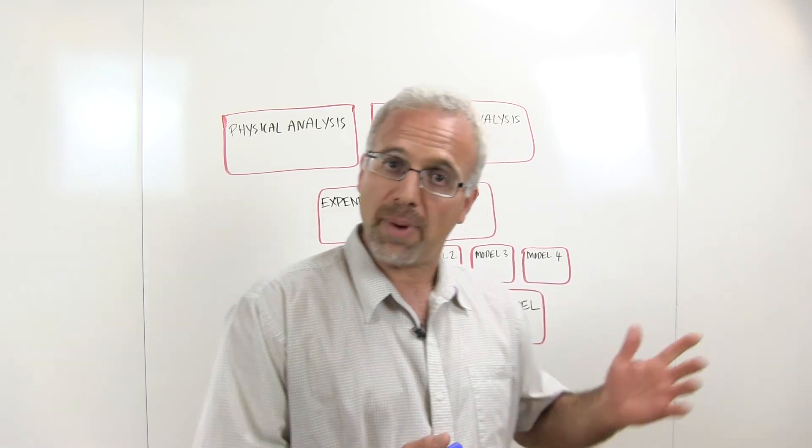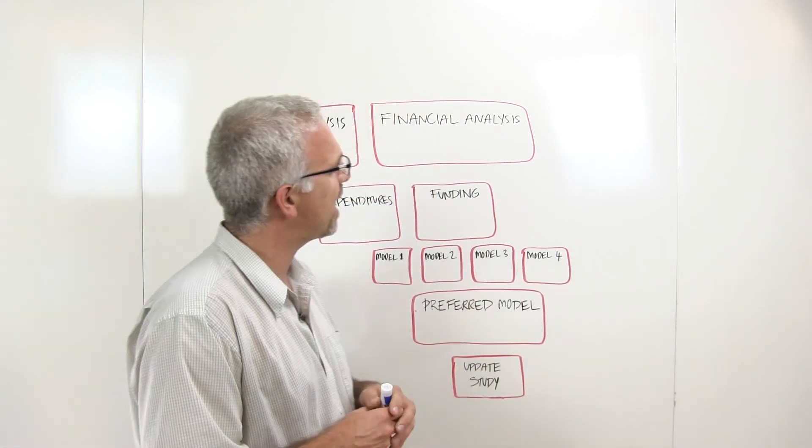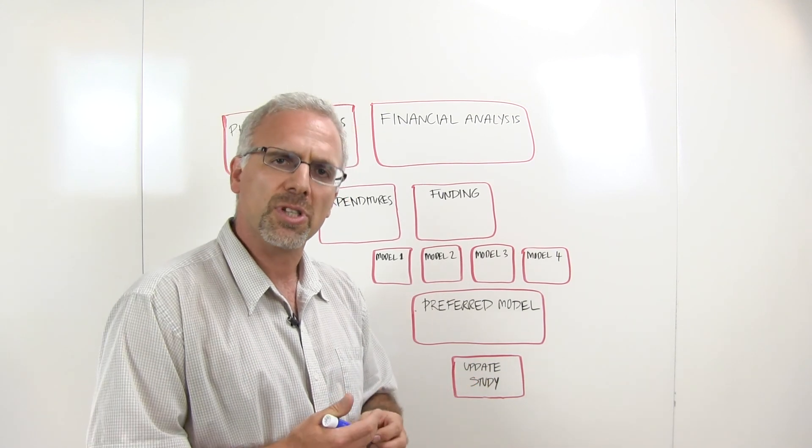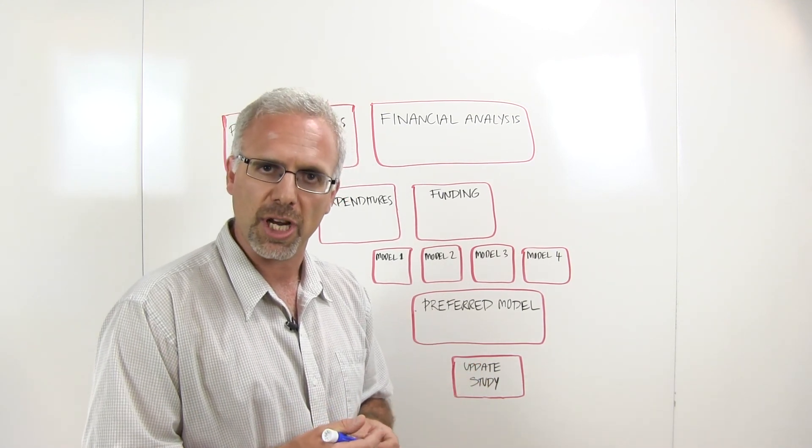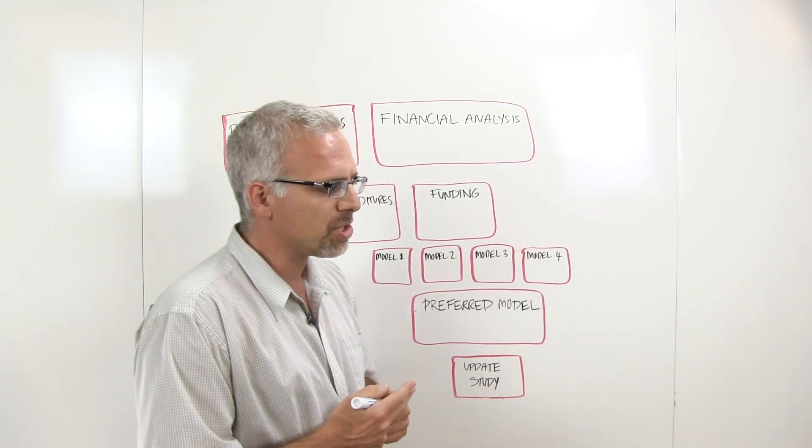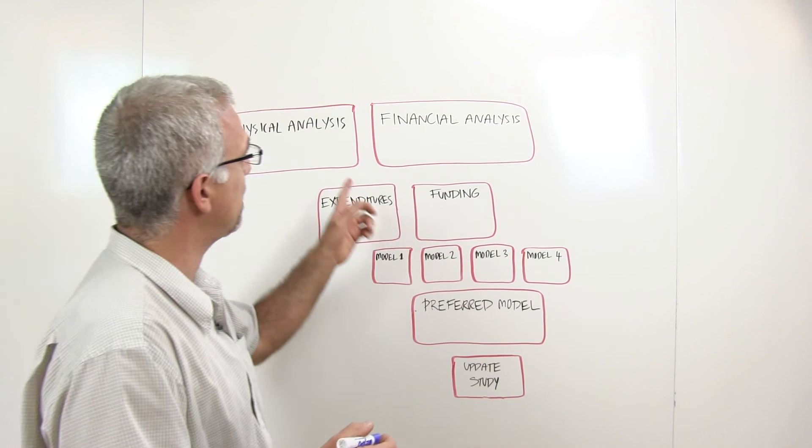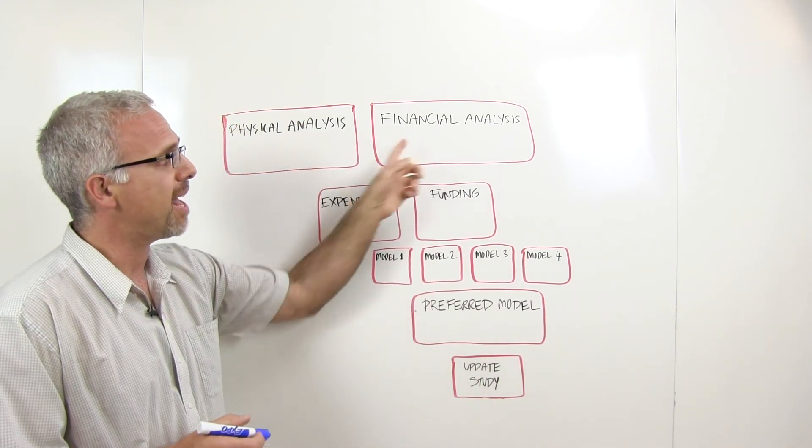On the whiteboard behind me, I've laid out a rough network diagram to help me explain what is a depreciation report. The regulations require that every depreciation report must contain two parts: a physical analysis and a financial analysis.